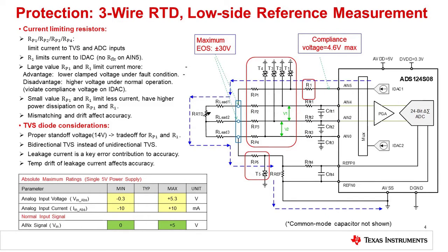Here we show the common 3-wire RTD measurement circuit with TVS protection circuitry added. Note that this example is designed to protect against continuous faults. The protection circuits are circled in red on the right side. The RP1, 2, 3, and 4 resistors are used to limit current to the TVS diodes and ADC inputs. The R1 resistor is used to limit fault current into the IDAC. This circuit is often used in programmable logic controller, or PLC, applications. The power supply for a PLC is often 24 volts, but could be as high as 28.8 volts with 20% variation, so designing for a continuous overstress of plus or minus 30 volts is used as a maximum overstress signal.